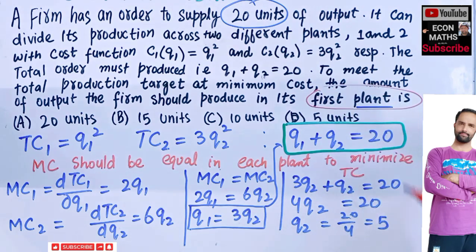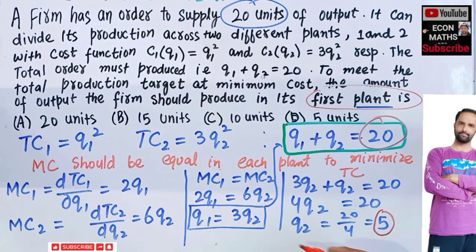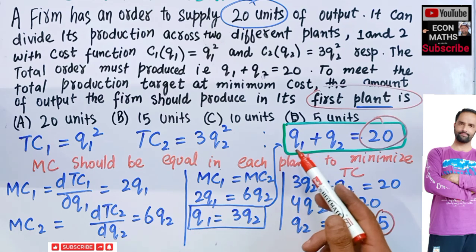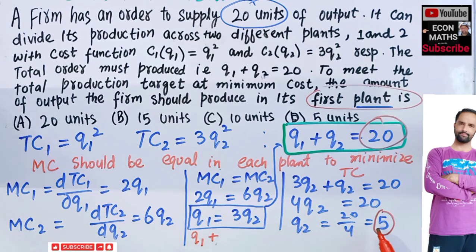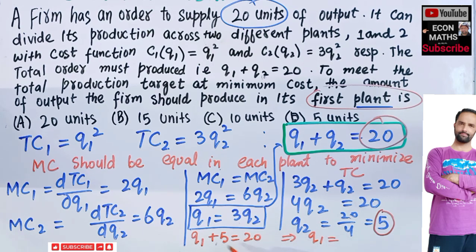The question asks how many units the firm should produce in the first plant. Since the firm must produce 20 units total and produces 5 units in Plant 2, we get Q1 plus 5 equals 20, which gives Q1 equals 15. The firm should produce 15 units in Plant 1 to minimize cost.